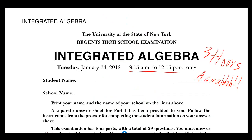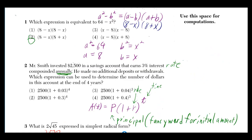Problem 1. Which expression is equivalent to 64 minus x squared? That is in the form of a squared minus b squared, where a squared is equal to 64 and b squared is equal to x squared.